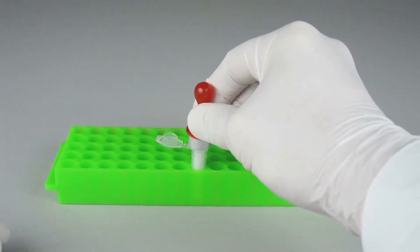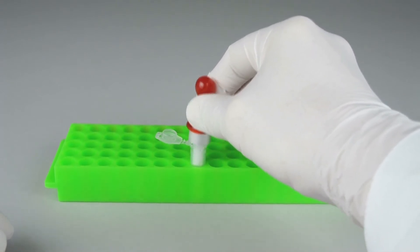Lift the puncher with the attached column and snap off the bottom closure of the column.